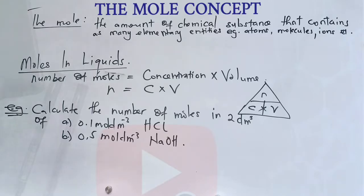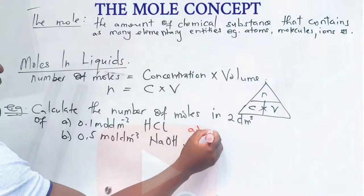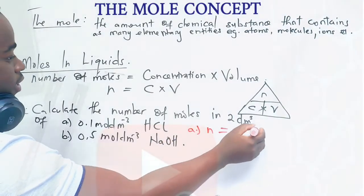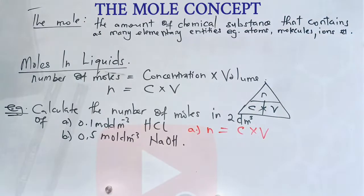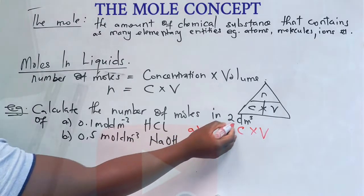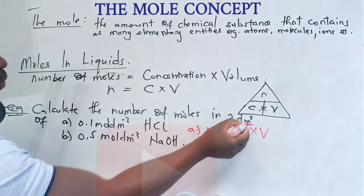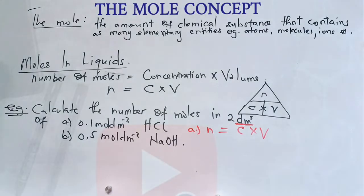A) number of moles is equal to concentration times volume. Remember, to perform these calculations, your volume should be in cubic decimeters. If the volume is given in cubic centimeters, you need to convert it to cubic decimeters.